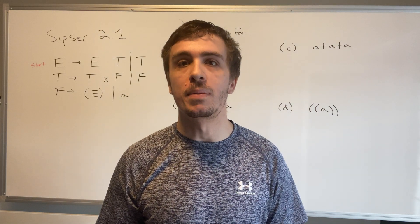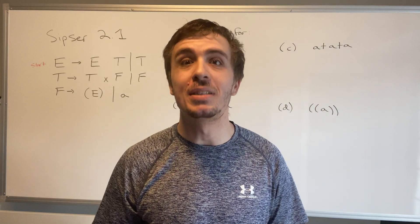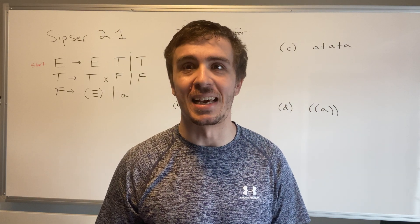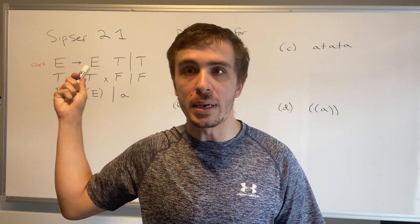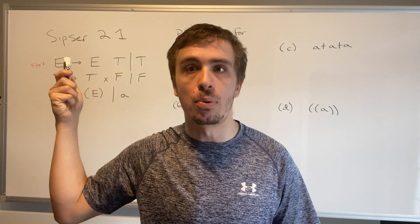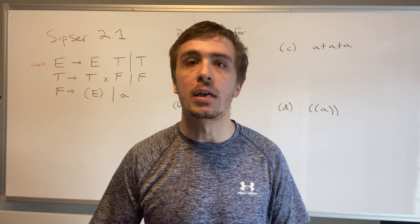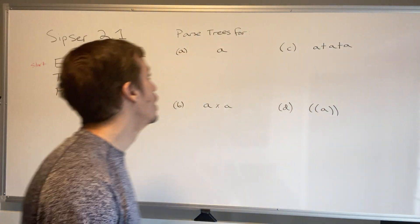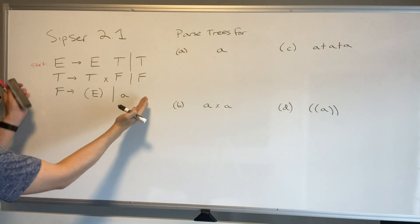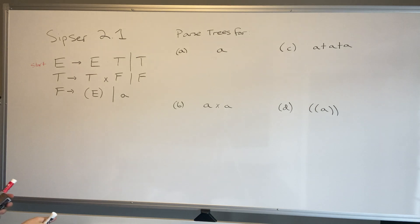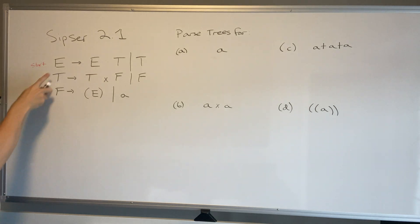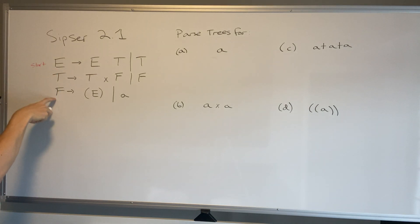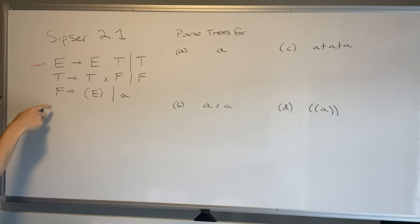We're going to be learning about context-free grammars and parse trees today. We have CIPSR 2.1 and we're going to go over the solution to this problem. We have this context-free grammar right here — E is the start variable, and we have two other variables: T and F.